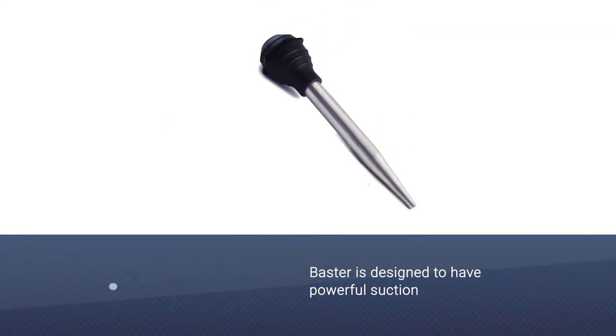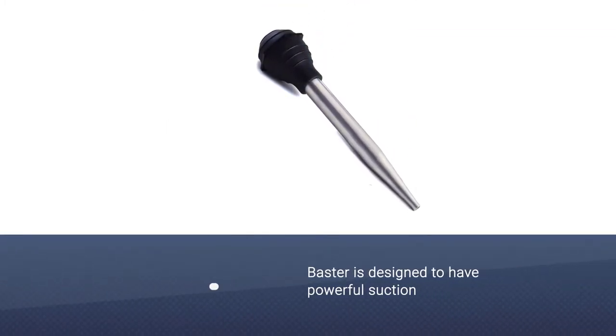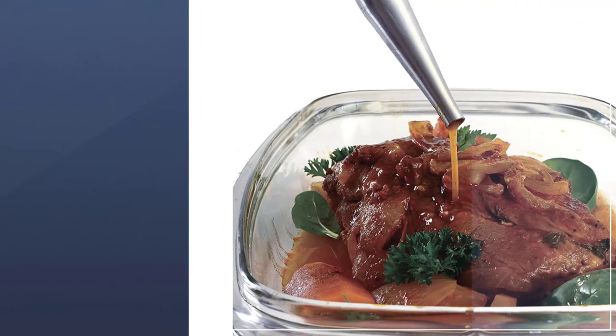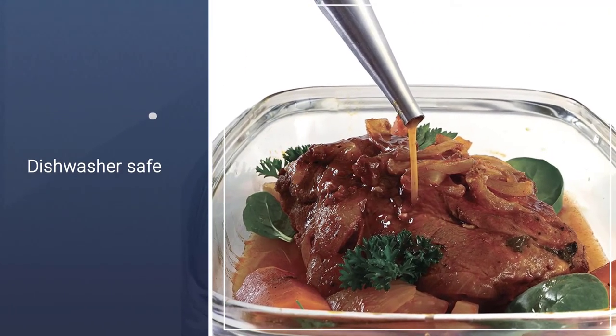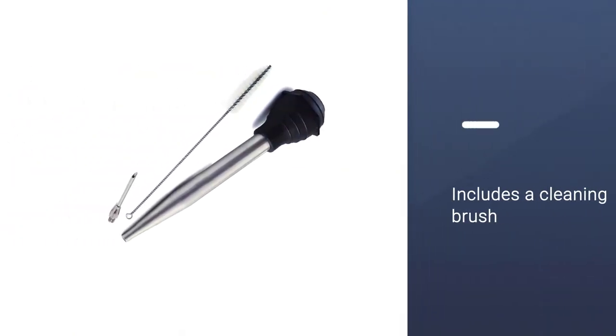Since the bulb is heat safe to 450 degrees and the stainless steel can withstand the same heat as your stainless steel cookware and bakeware, the baster is designed to have powerful suction. This is dishwasher safe and also includes a cleaning brush for easy hand washing.